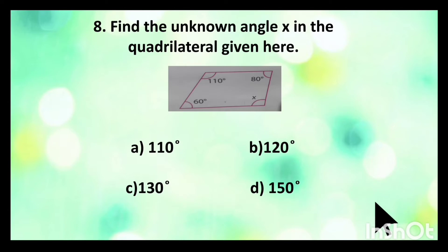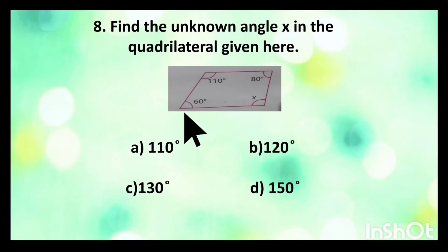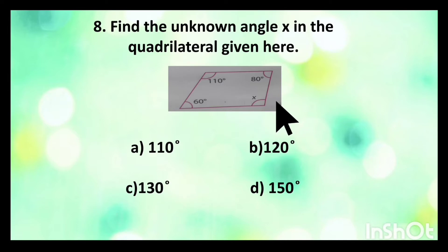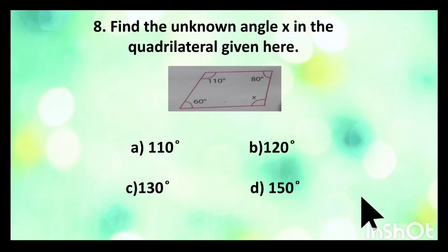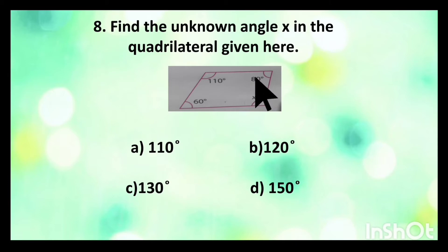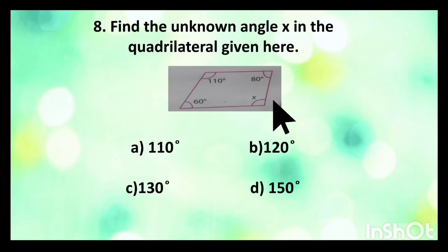Now let's see the 8th sum. Find the unknown angle X in the quadrilateral given here. A quadrilateral picture is given with all 4 angles, and one unknown angle X. We are asked to find that unknown angle. We know that the sum of all 4 angles in a quadrilateral is equal to 360 degrees. Three angles are already given, so we count those 3 angles, then subtract their sum from 360 degrees to get the unknown angle X.